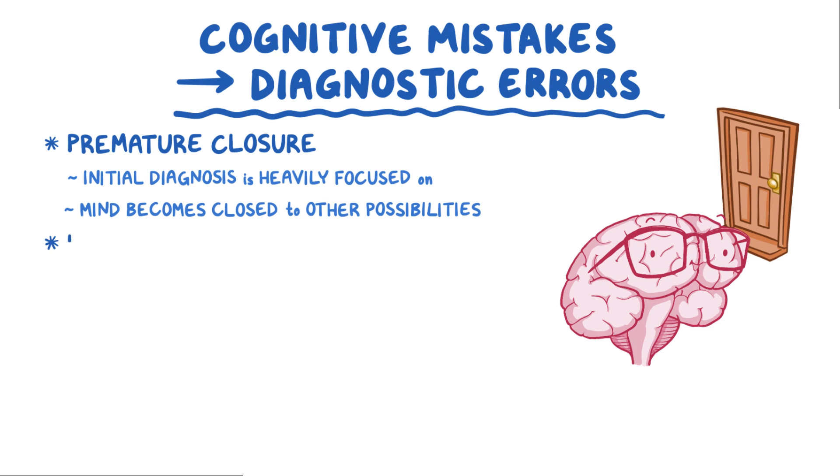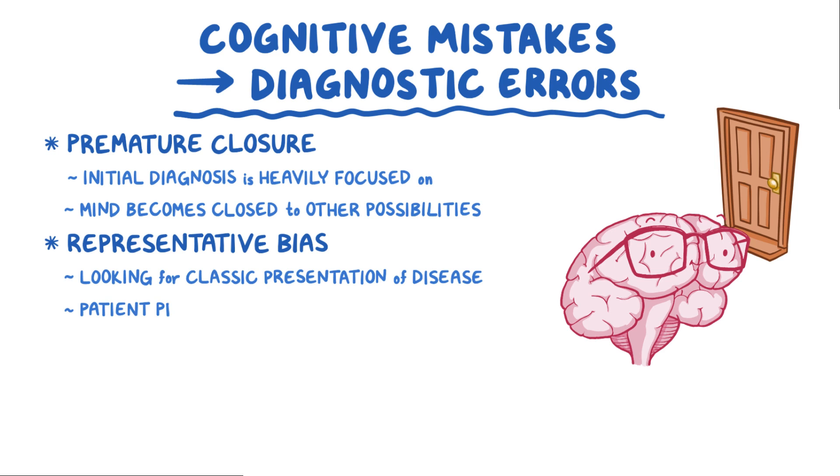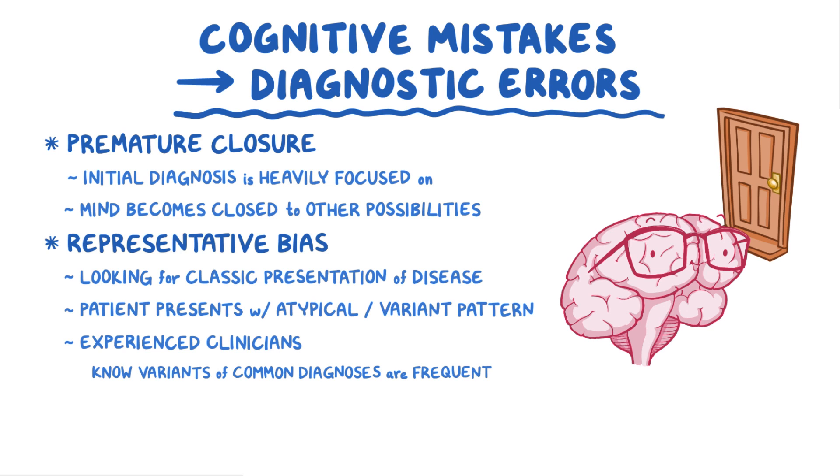Another cognitive mistake is representative bias, and that's when a clinician is looking for the classic presentation of the disease, and the patient presents with an atypical or variant pattern. Experienced clinicians know variants of common diagnoses are frequent, and they happen more often than we immediately think.